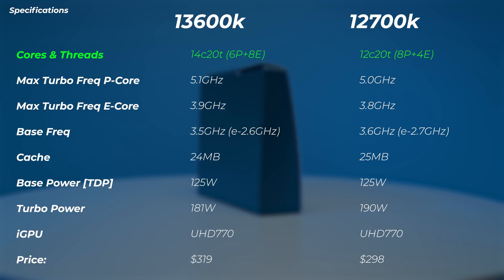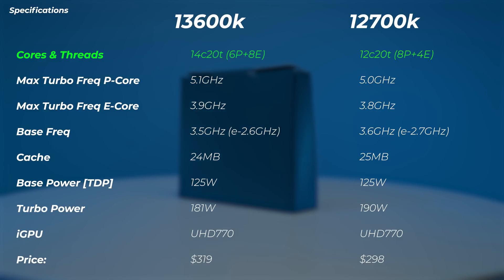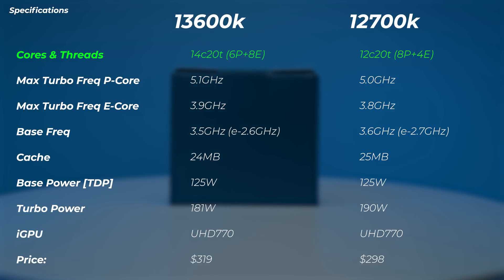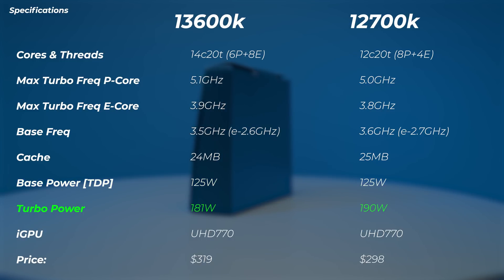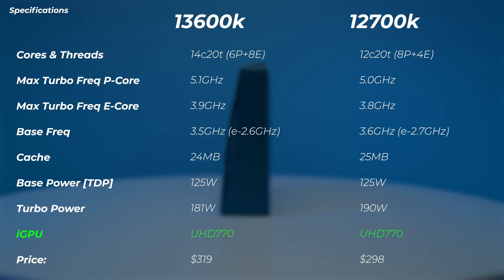The 13600K has 14 cores and the 12700K has 12 cores, but their P-core and E-core ratio is different. The 12700K has only 4 E-cores where the 13600K has 8, and the 12700K has 8 P-cores versus 6 P-cores on the 13600K. Max turbo frequency is 100 MHz lower on the 12700K. Base TDP is the same at 125W; turbo power is 181W on the 13600K and 190W on the 12700K. They have the same iGPU.